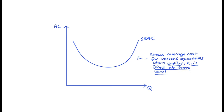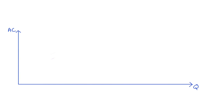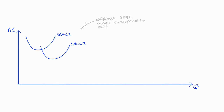If we zoom out so the quantity axis is long enough to accommodate any possible quantity a firm could produce, then for some particular level of capital we might get SRAC1, and at a different level of capital we would get a different short-run average cost curve, maybe SRAC2. We can think of SRAC1 as being associated with perhaps one factory and its equipment, and SRAC2 with a different, maybe bigger factory, or one with equipment more suited to producing larger amounts.